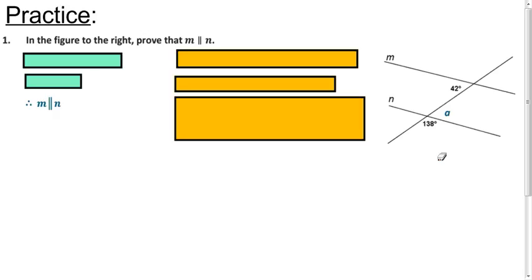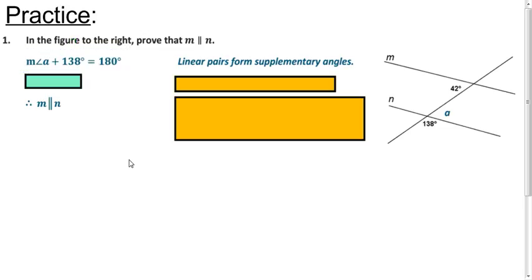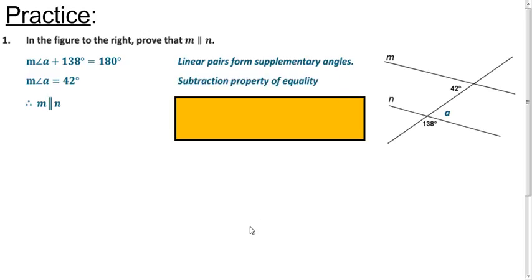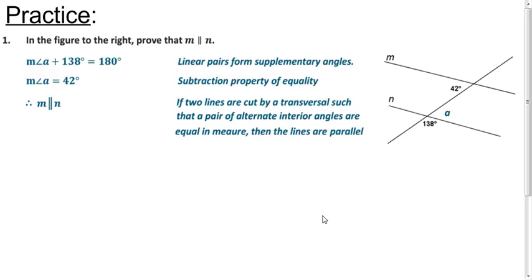What can I say about angle A? Well, I know angle A and the angle that measures 138 degrees are a linear pair, so they're supplementary. So we know if we add those measures together, we get 180 degrees. So what's the measure of angle A? 42 degrees, and how did we get that? We subtracted 138 from both sides. And so now, why is M parallel to N? Because the alternate interior angles are congruent. So you don't have to be as wordy as we have it here. You could just say alternate interior angles are congruent, so the lines are parallel. Something along those lines.